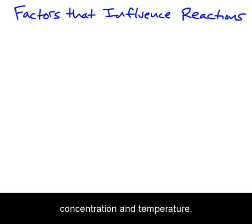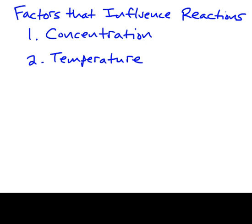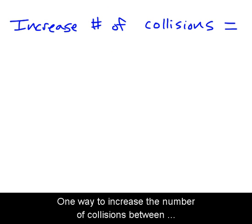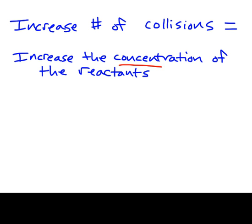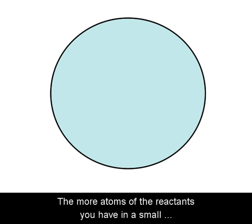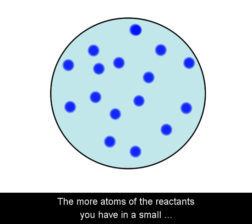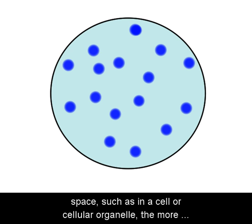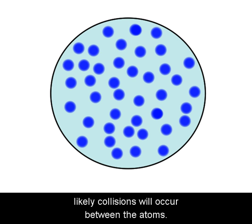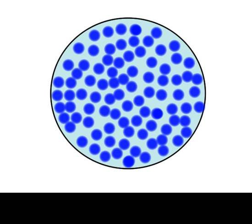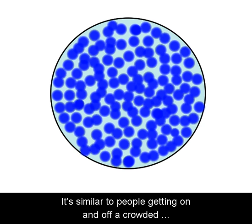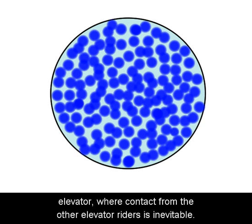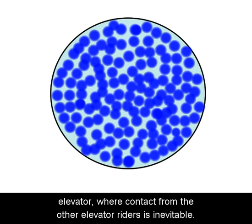There are two important factors that influence the chances of starting a chemical reaction: concentration and temperature. One way to increase the number of collisions between atoms of reactants is to increase the concentration of the reactants. The more atoms you have in a small space, such as in a cell or cellular organelle, the more likely collisions will occur. It's similar to people getting on and off a crowded elevator, where contact from other riders is inevitable.